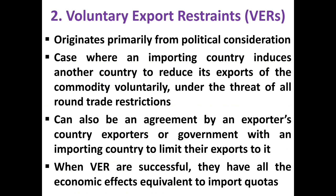Voluntary export restraints emerge as a result of certain political considerations. Here, an importing country induces or requests another country to voluntarily reduce their exports of the commodity. But there is also a threat of all-round trade restriction — if this request is not accepted, the importing country can impose tariff or quota system. It can also be an agreement by an exporting country's government with an importing country to limit their exports. If voluntary export restraints are successful, they will have the same effect as import quotas.